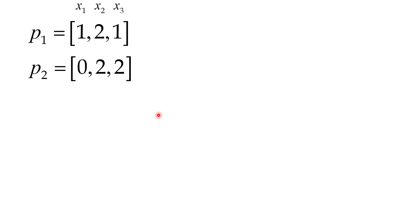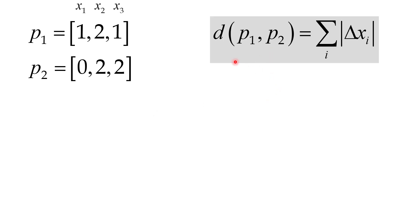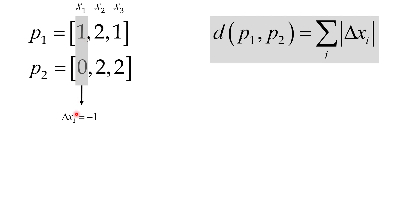In order to calculate the Manhattan distance between two points like P1 and P2, here is the formula: it is the summation of the absolute value of differences in their coordinates. For example, the delta x1 — the difference between their x1 coordinates — is 0 minus 1, which equals minus 1. The absolute value of that is 1.